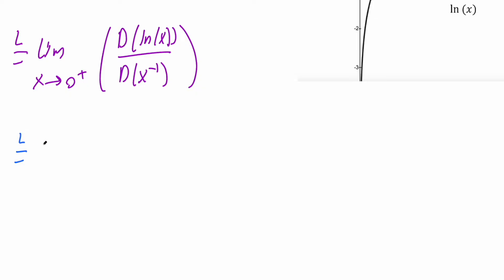So again, we're doing L'Hopital's rule. So we have x is approaching zero to the right. And the derivative of ln(x) is one over x. And the derivative of x raised to negative one would give us negative x raised to negative two, close parentheses.